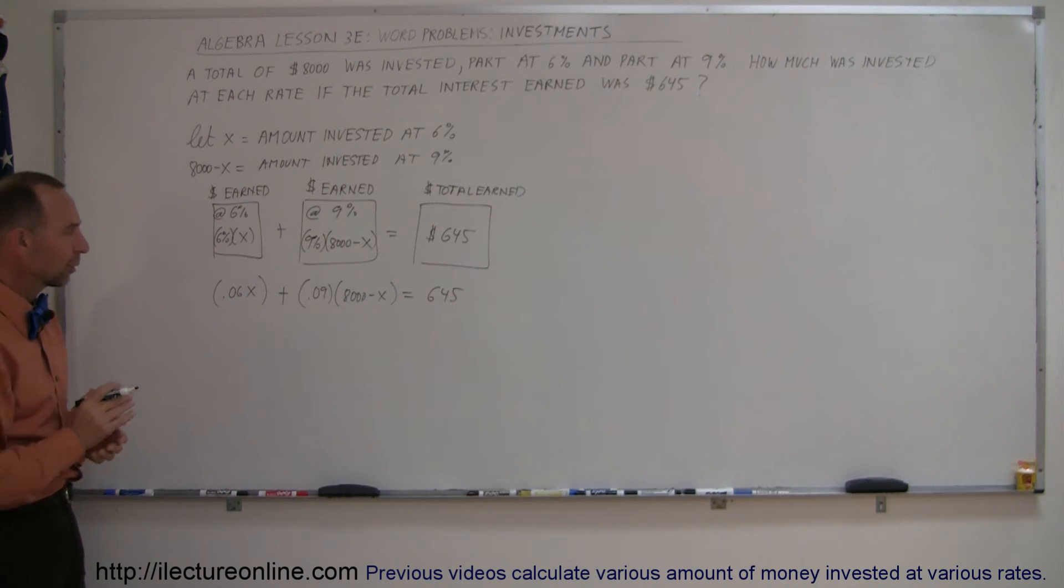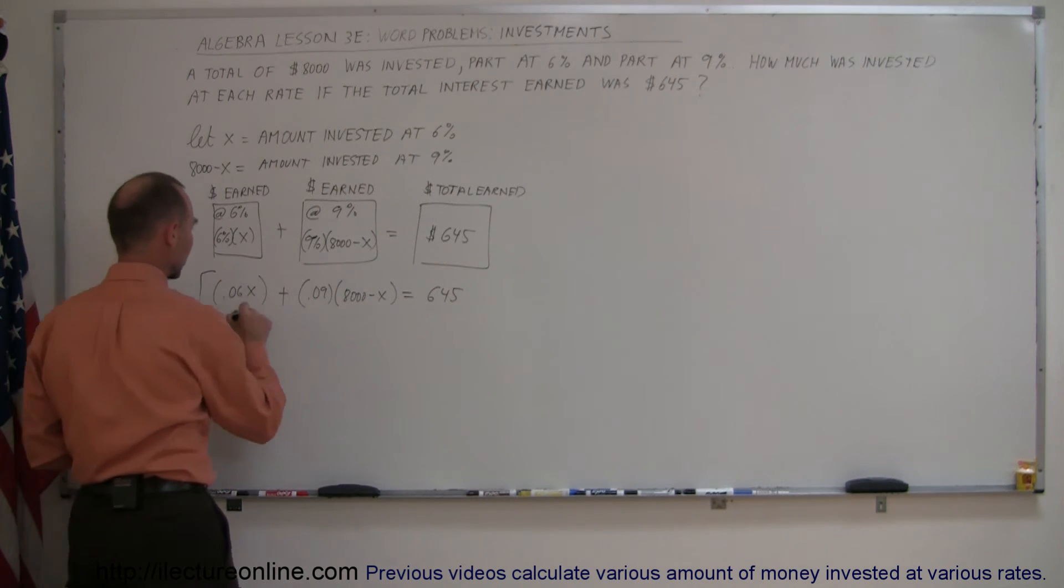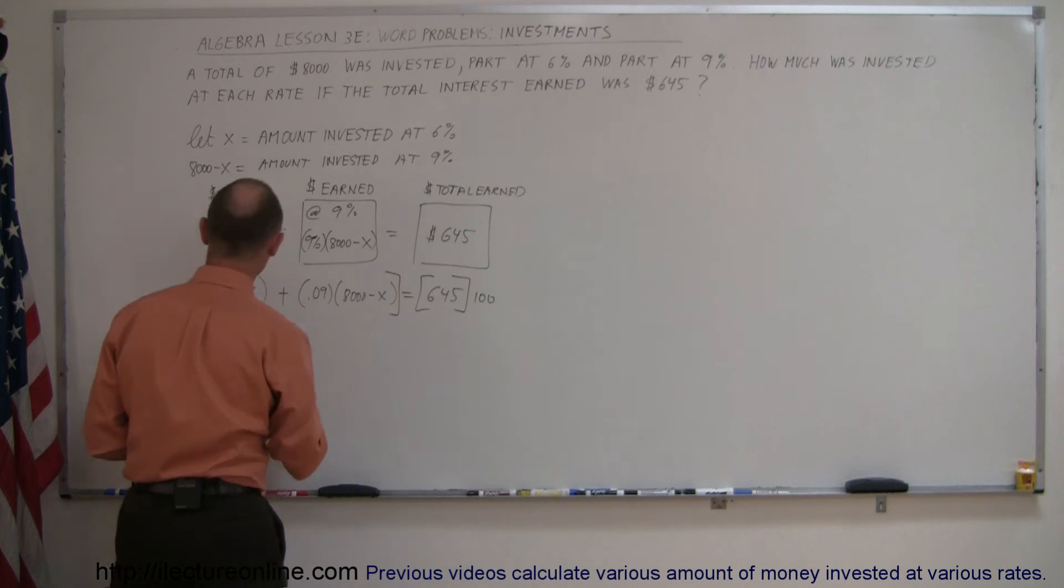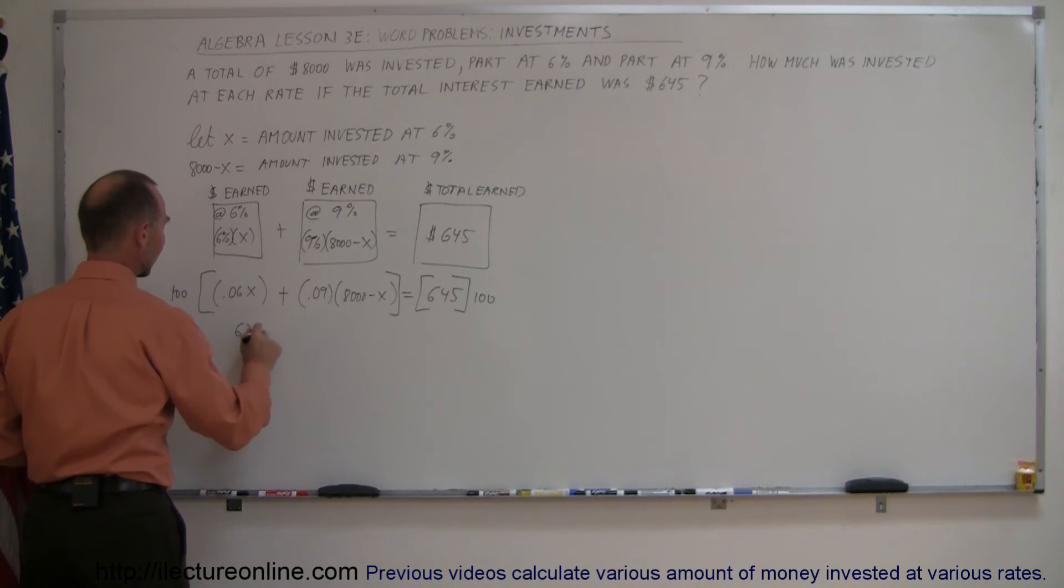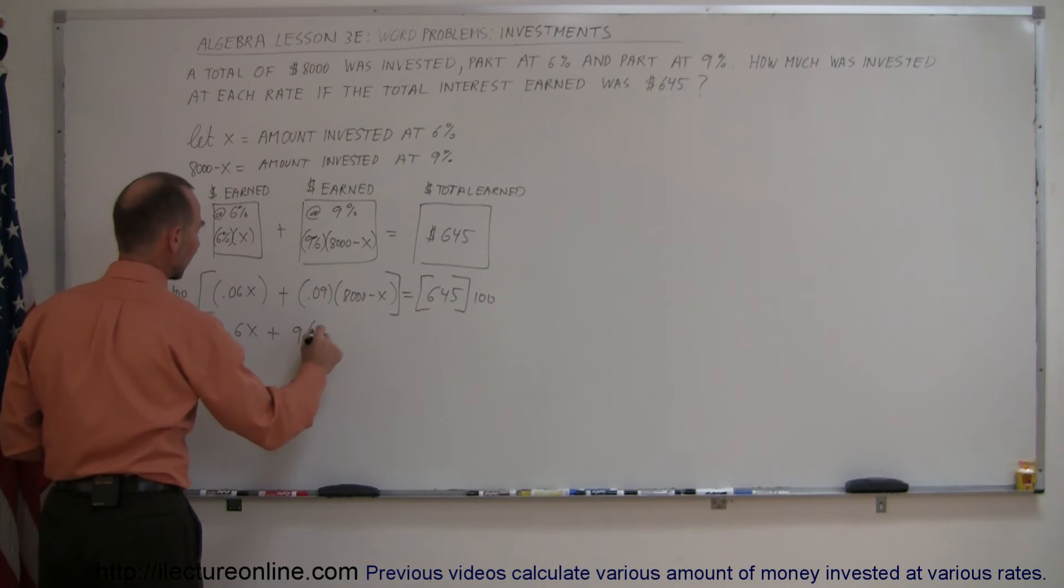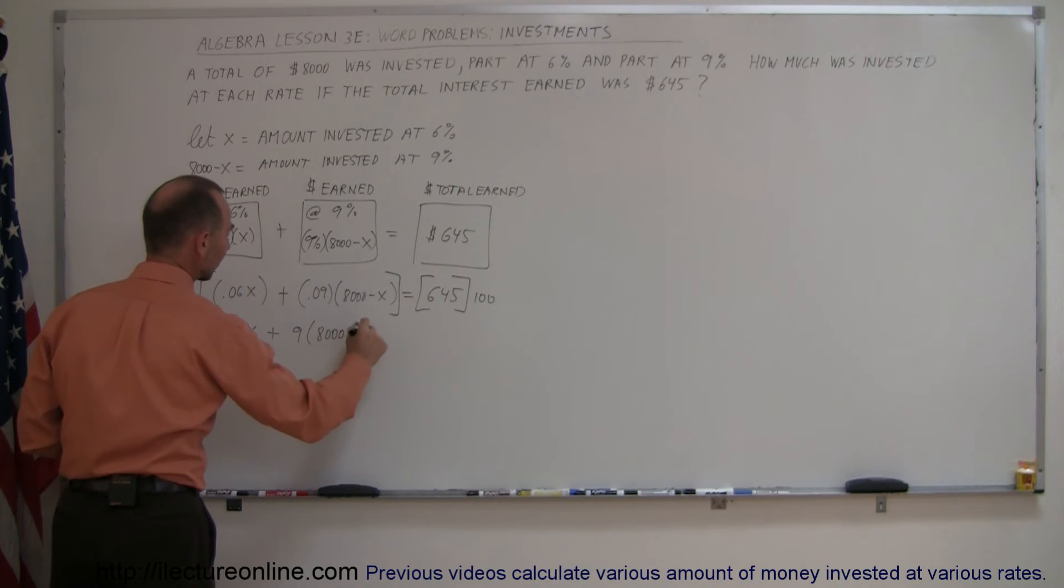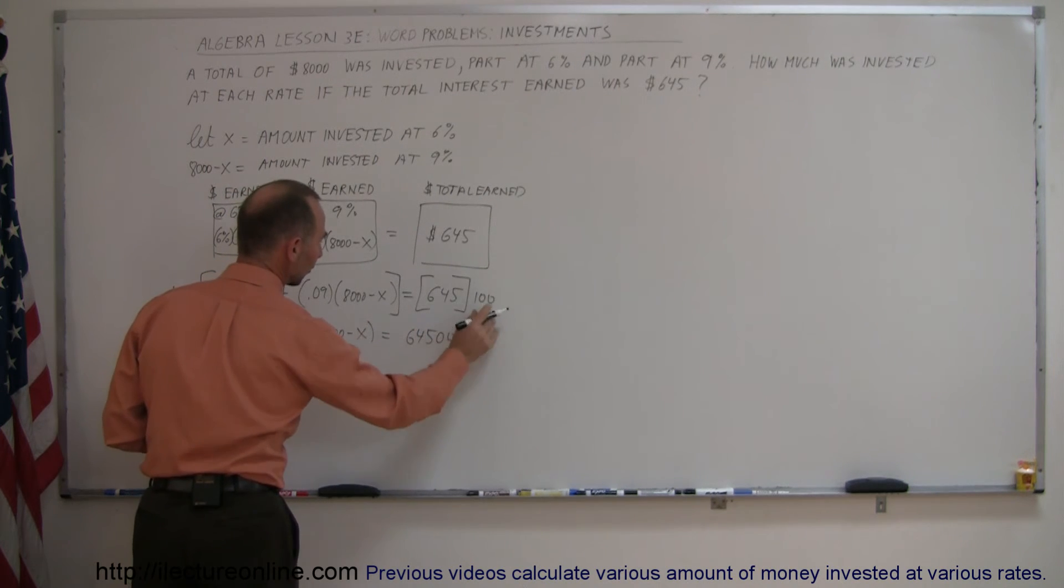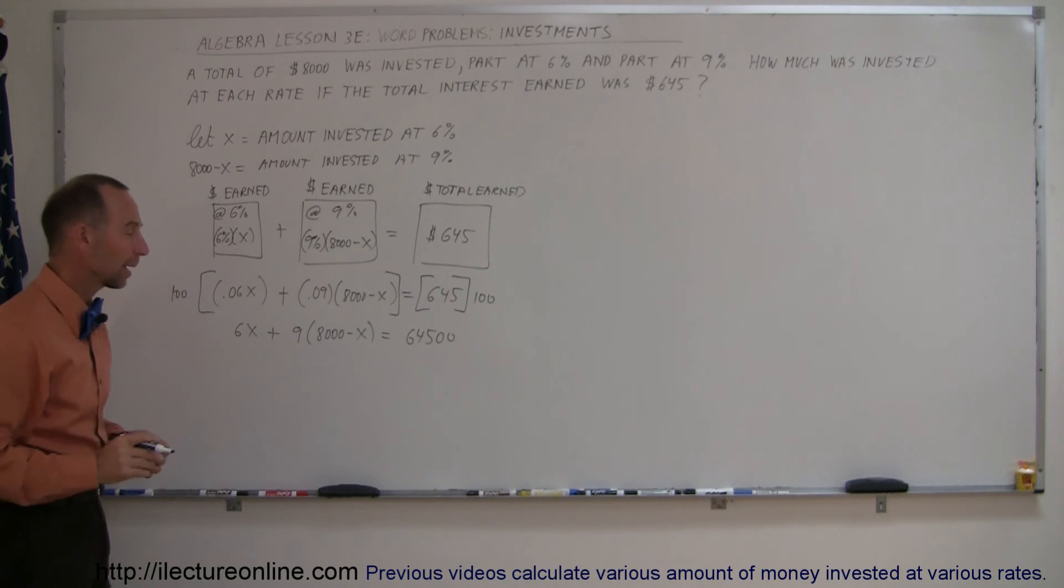Again, we have to get rid of the decimal places, which means we're going to multiply the left by 100, multiply the right by 100. When we do that, we get 6X plus 9 times 8,000 minus X is equal to 645 with 2 zeros.